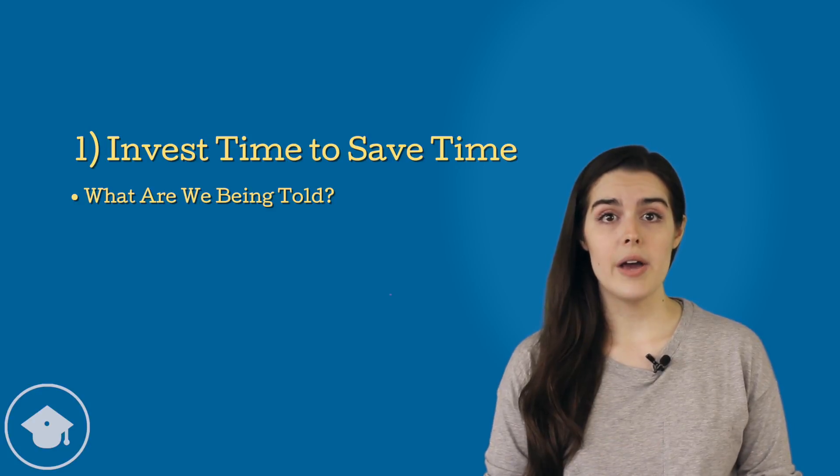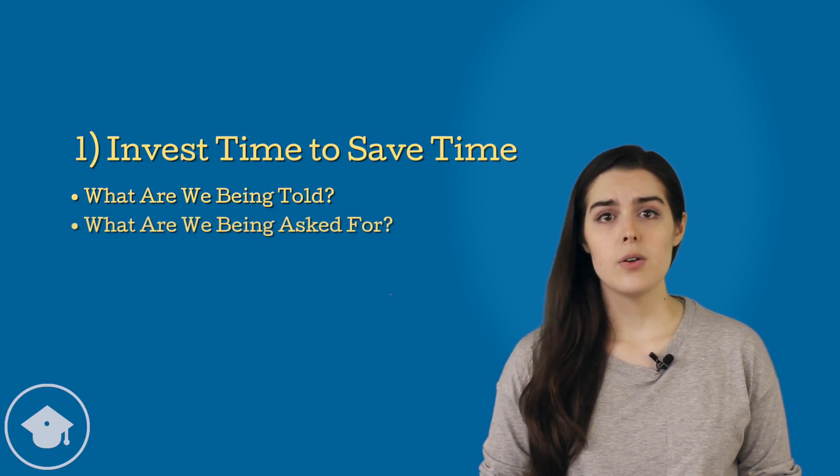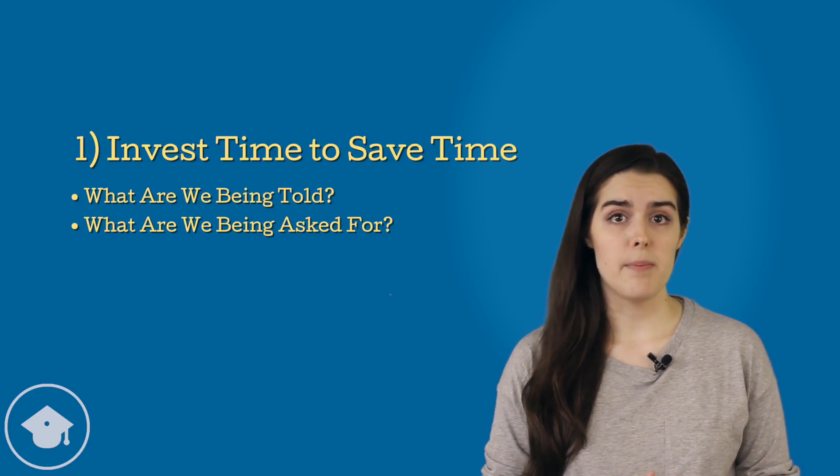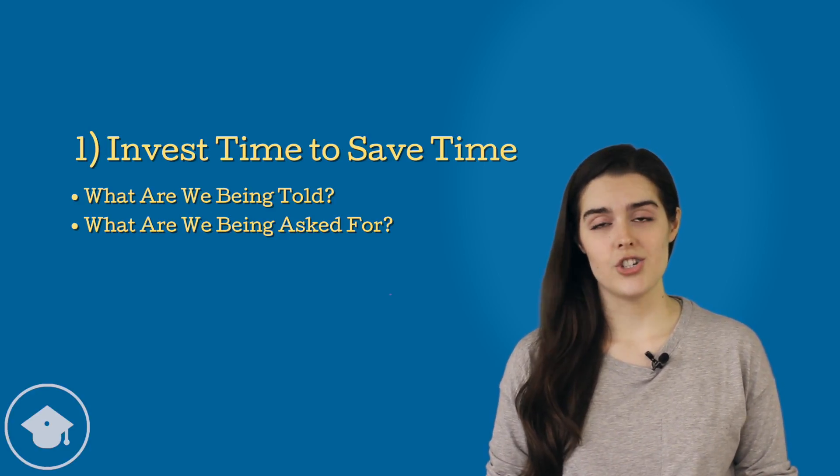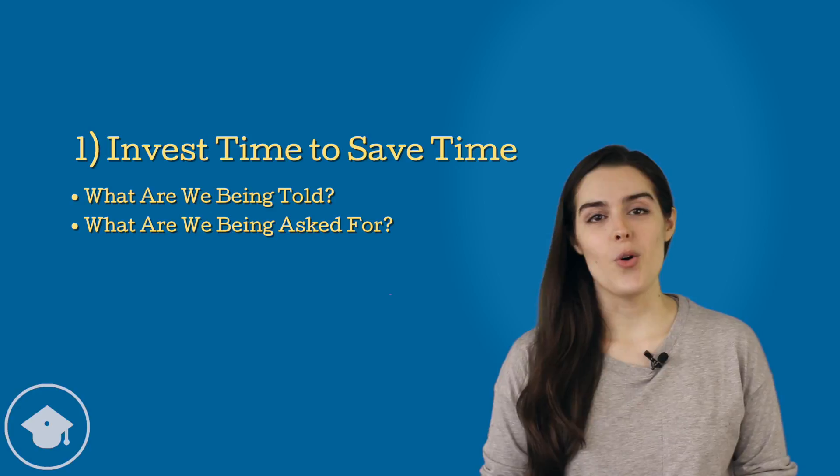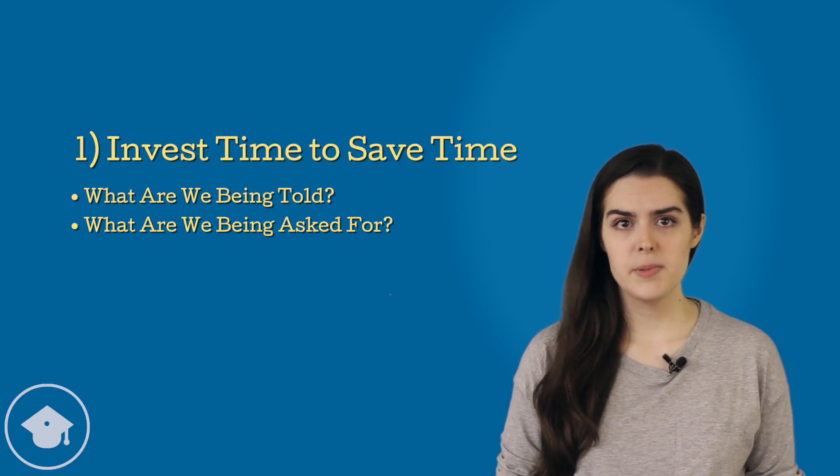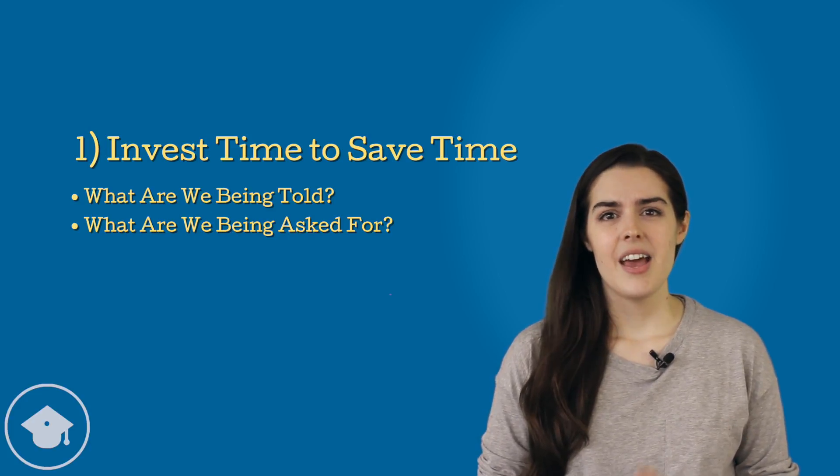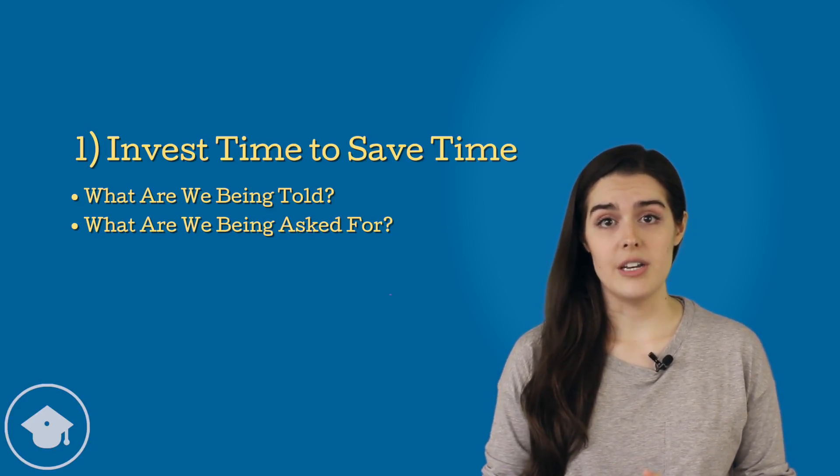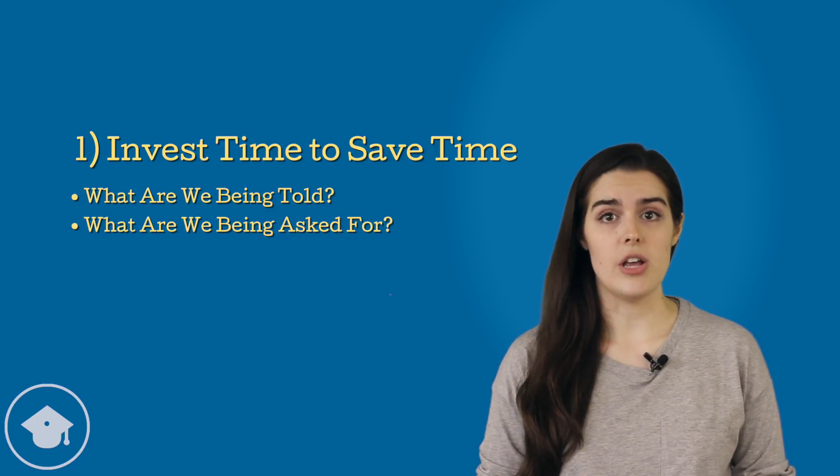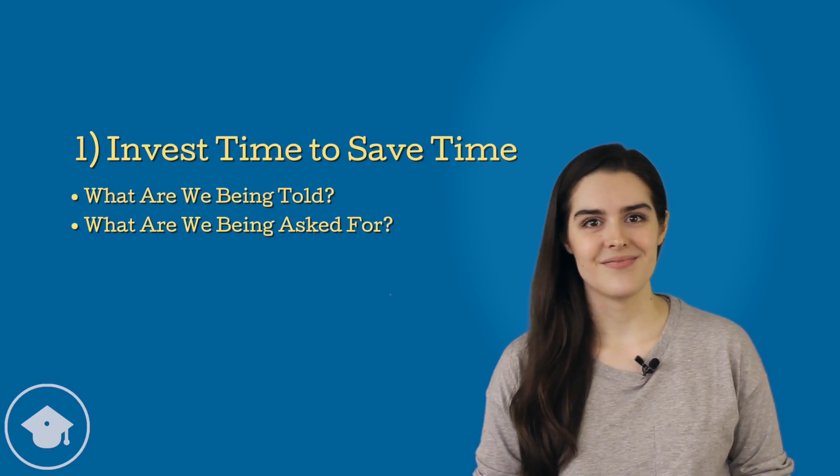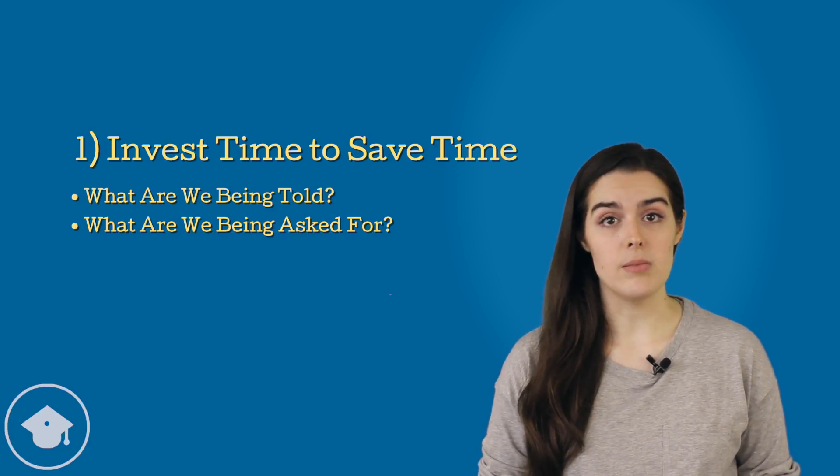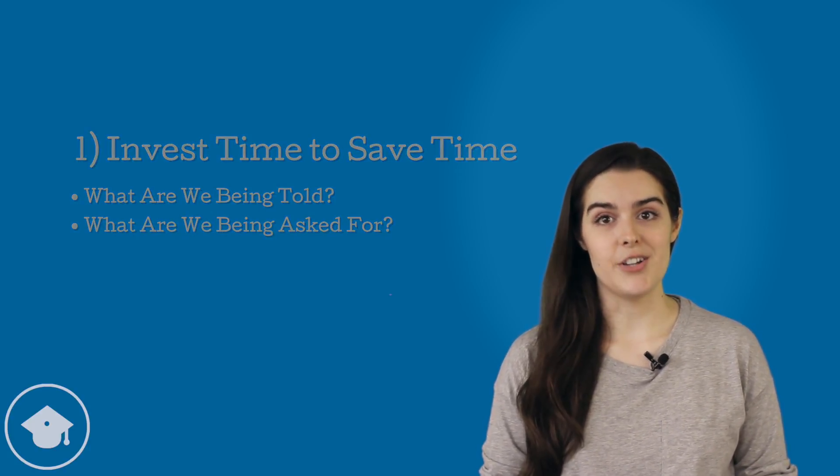Second, we need to figure out what we're being asked for. Now, this is an important step, so don't skip it. The test makers want you to trip up, so they'll often ask a different question than the one you want to answer, or include values from intermediate steps, so things you'd find on the way to the correct answer, as wrong answer choices. Figuring out what you're trying to solve for in advance helps you not to trip at the finish line by solving for the wrong thing. These two steps are the most important part of any problem, so don't start solving until this is done.